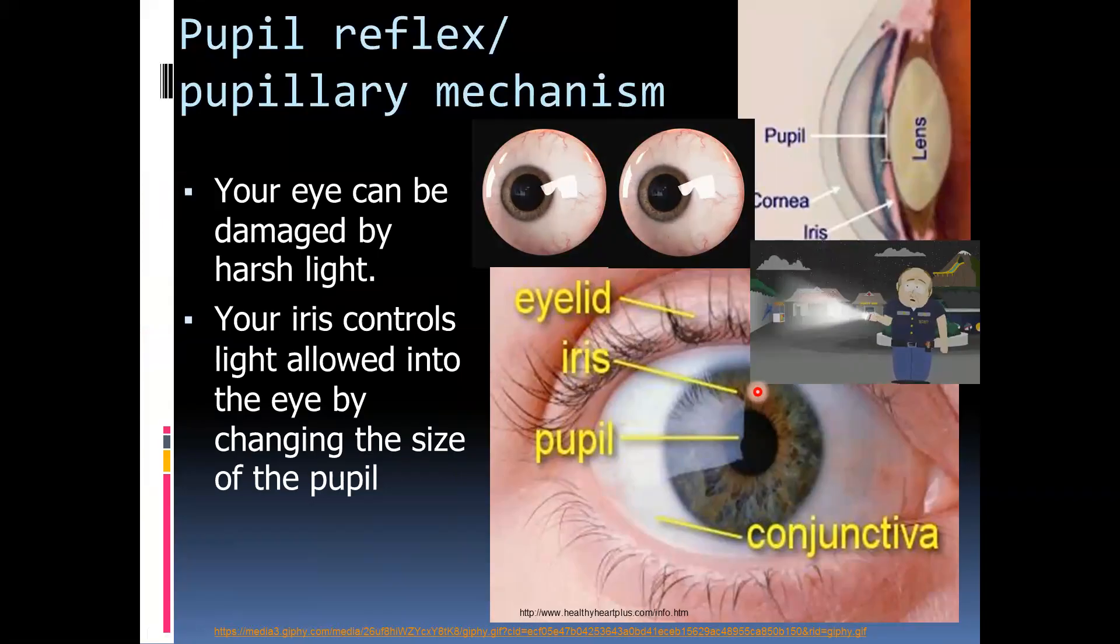We have mentioned that the colored part of the eye is known as the iris and that is what can change the shape of the pupil. The pupil itself is not a structure, but rather just the opening within the iris through which light enters.